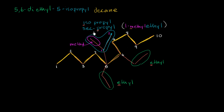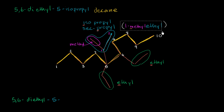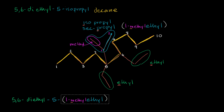Or if we wanted to use sec-propyl instead of isopropyl, we could write sec-propyl there. Or if we wanted to do systematic naming, we could call this 5,6-diethyl-5-(1-methylethyl) decane. So all of these are reasonable ways to name it. This would be the common way where we use isopropyl. Here we're doing it more systematically by calling that group 1-methylethyl.